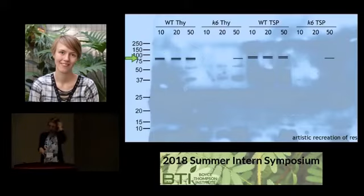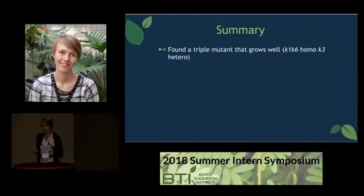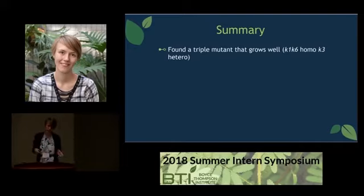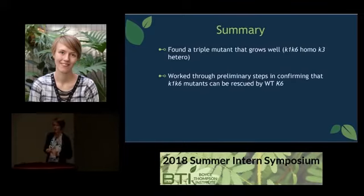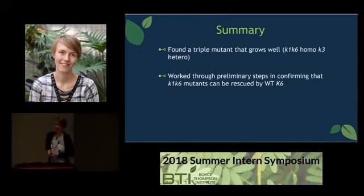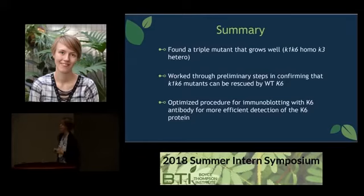In summary, while studying the dosage effects for various ABC1K, I may have found a triple mutant — the K1K6 homozygous, K3 heterozygous — that can grow well enough for molecular study. It's doing well on soil right now, though it remains to be seen if it can viably reproduce. Additionally, I worked on the preliminary steps in testing if a K1K6 mutant can be rescued by transformation with the wild-type K6 gene. Finally, I've optimized the procedure for immunoblotting with the K6 antibody, which will allow for faster and more efficient detection of the K6 protein.